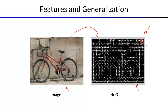People have spent a lot of time thinking about what makes an object category — what makes a bicycle be a bicycle. It's not the fact that it's red, or that a bar is exactly in a certain position. You want something that is invariant to small shifts. If the wheel is a little larger or smaller, you still want a very similar feature vector.